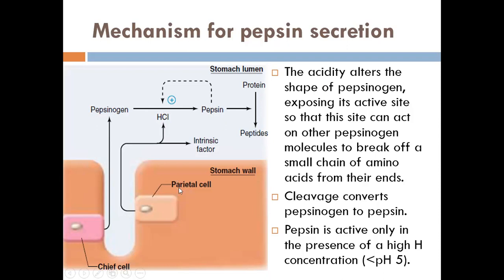The hydrochloric acid comes from the parietal cells. The hydrochloric acid alters the shape of pepsinogen, exposing its active site so it can act on other pepsinogen molecules to break off a small chain of amino acids from their ends — cleavage converts pepsinogen to pepsin. Pepsin is active only in the presence of high hydrogen ion concentrations, at low pH — the pH should be less than 5. If the pH is alkaline, pepsin won't be active.